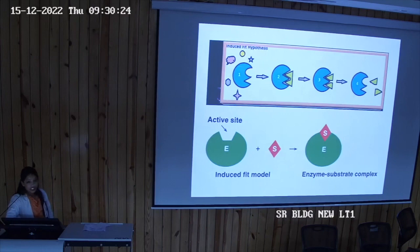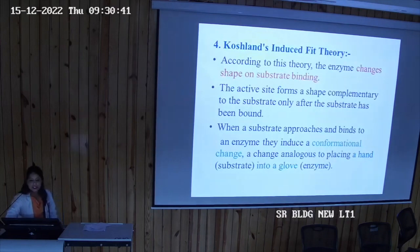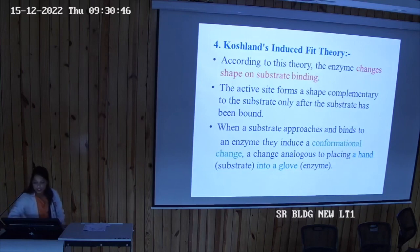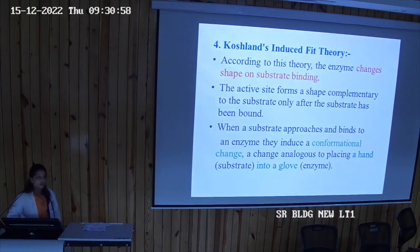In contrast, the Koshland induced fit theory proposes that substrates may differ in shape from the active site. When the substrate approaches the enzyme, conformational changes occur in the active site to accommodate the substrate — analogous to placing a hand into a glove. This flexible adjustment allows the chemical reaction to proceed.